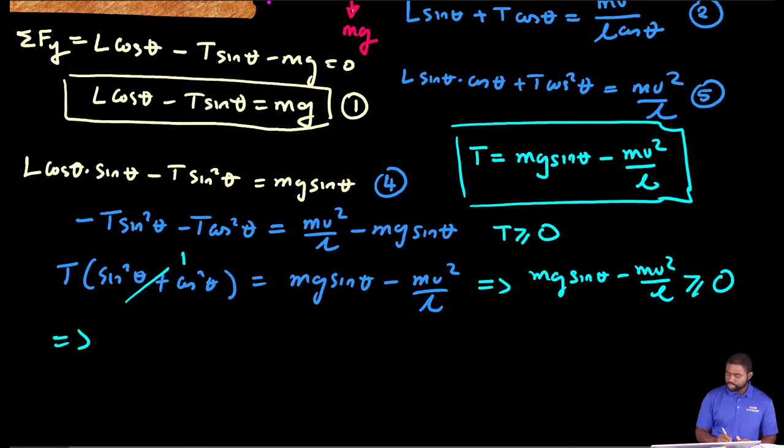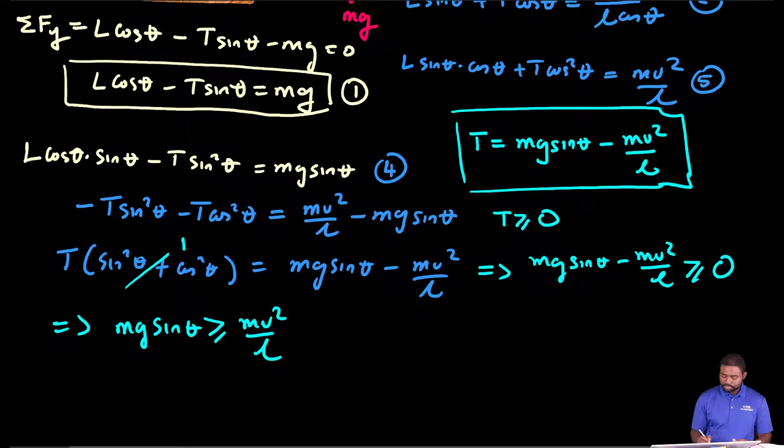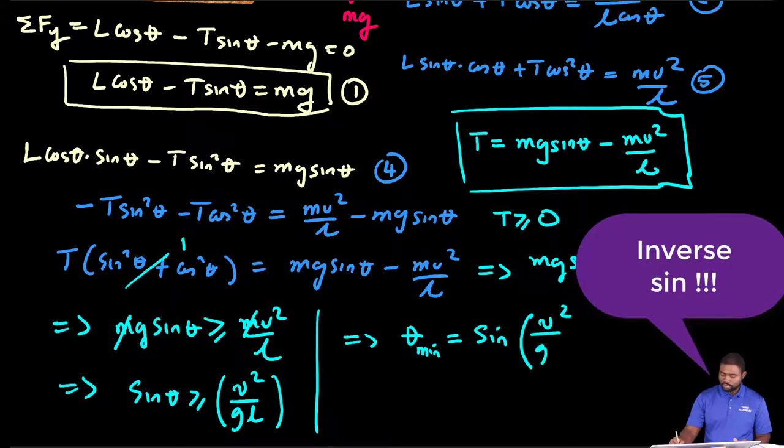So if we solve that equation, we will have mg sine theta must be greater than or equal to MV squared over L. In other words, we are saying that the M's can go away and the sine of theta must be greater than or equal to V squared all divided by gL. So how do we interpret this?